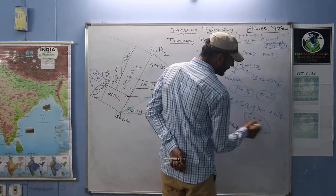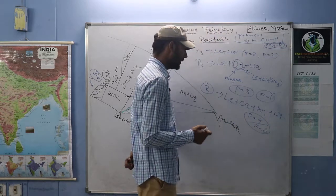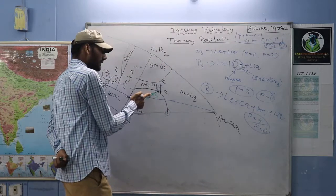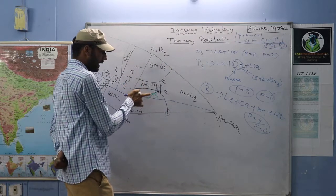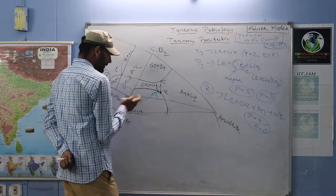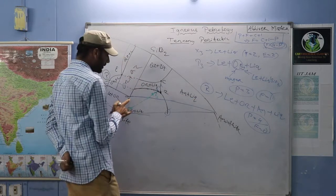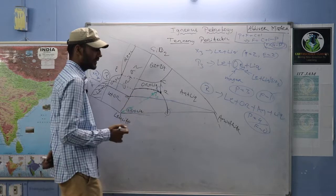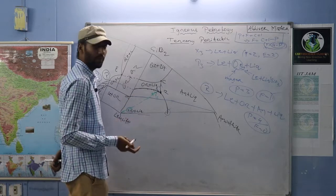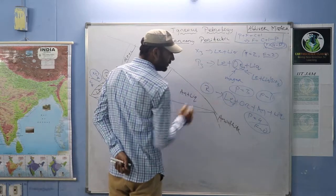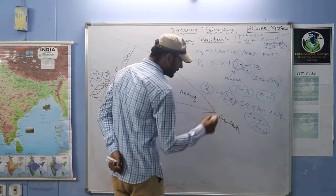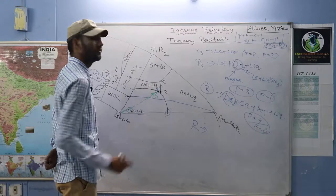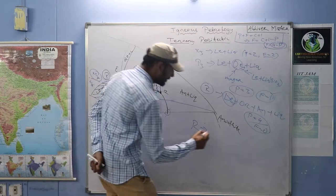The final composition is orthoclase plus anorthite plus quartz because X3 is above this line. Now comparing X3 and X4: at X3, it touches point P3 then moves to R — the gap between P3 and R is very small. But from P4 to R the path is much longer. Now let us introduce a new composition X4.